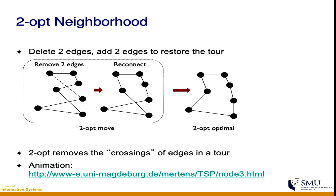In particular, 2-opt involves identifying two edges that you try to remove and then restoring the tour by reconnecting those edges. For example, given an existing solution you identify two dotted edges, remove them, and reconnect by swapping partners so they connect in a different way. That reconnected solution might be better than the previous one. You only move to the new solution if it is actually better — if it's not better, there's no reason to make the move.